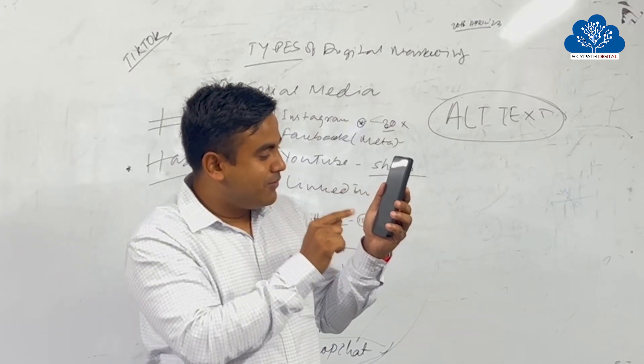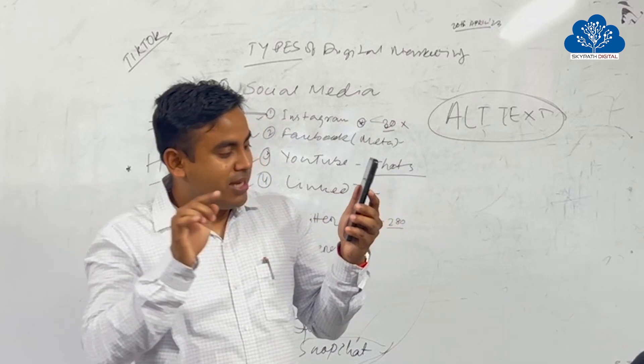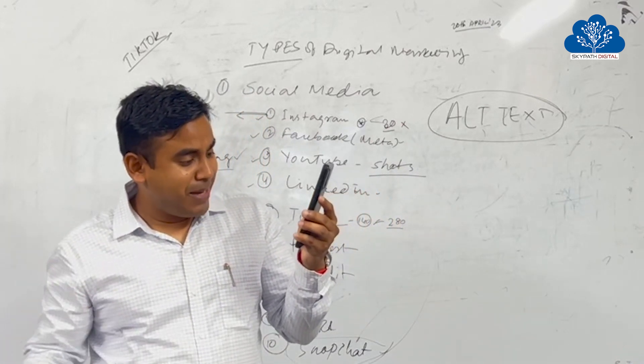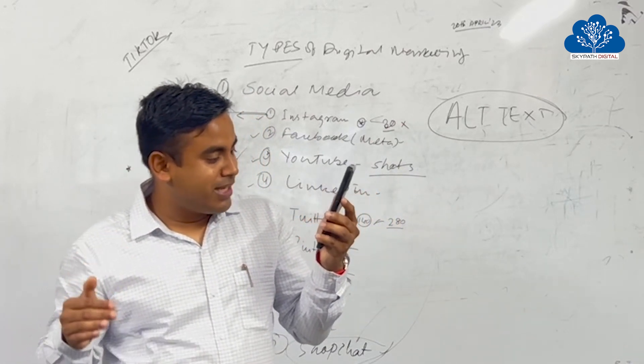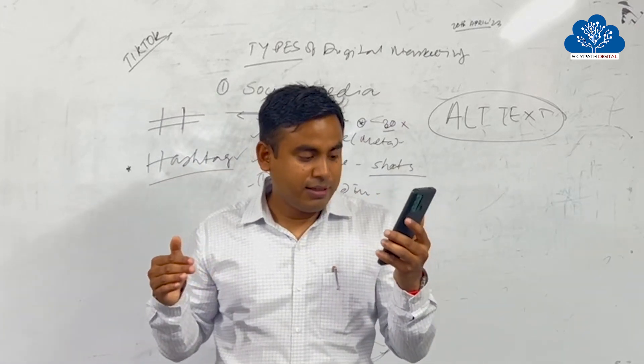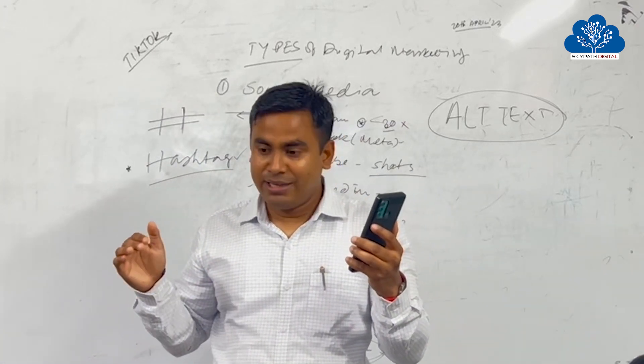Alt text - describe your photos for people with visual impairments. Alt text will automatically be created for your post, or you can choose to write your own.